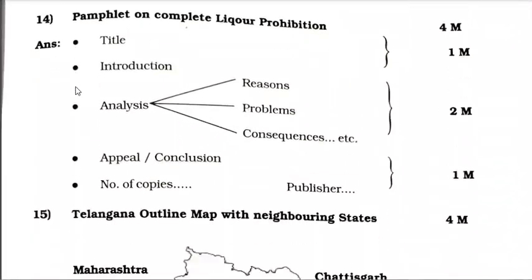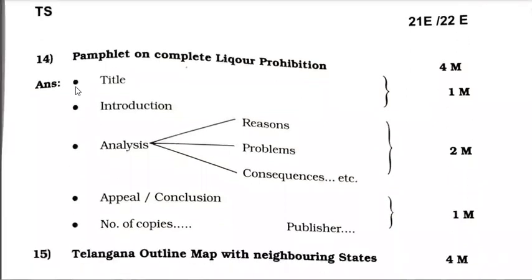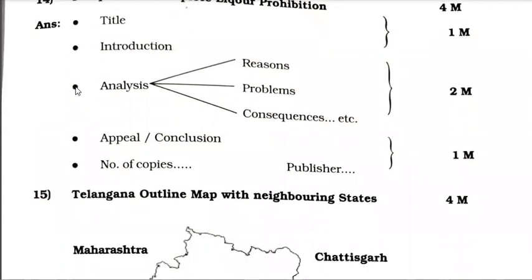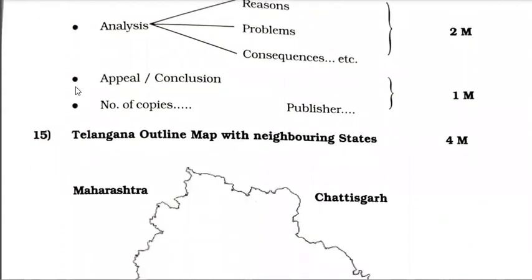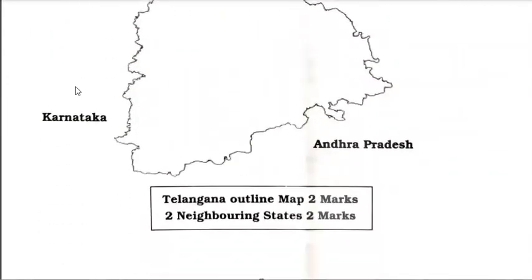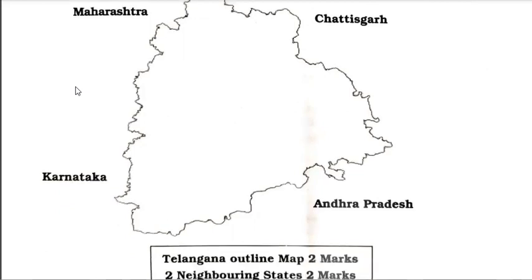These are 4-mark questions. Stepwise: title and introduction is 1 mark, analysis is 2 marks, last step is 1 mark. For the Telangana outline map — 4 marks total: the map itself is 2 marks and 2 neighboring states are 2 marks. Don't forget that whenever you get the Telangana outline map, you must mention at least one or two neighbor states: Andhra Pradesh, Chhattisgarh, Maharashtra, Karnataka.